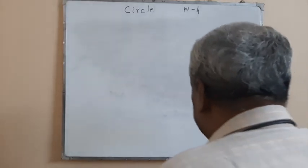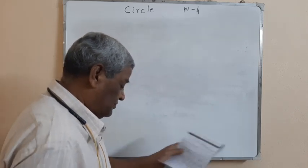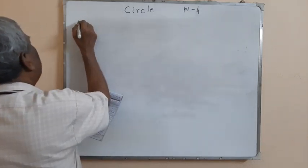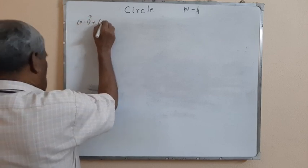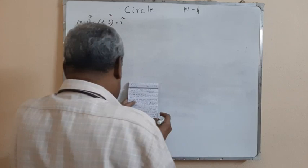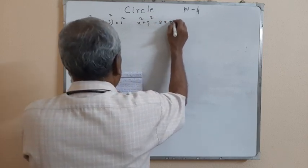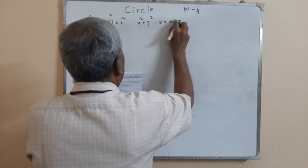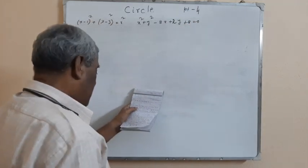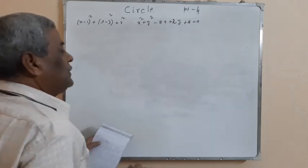Welcome. Today let us take a few more problems on circles. It is the fourth part of the video on circles. Our first problem is: if (x minus 1) squared plus (y minus 3) squared equals r squared, and x squared plus y squared minus 8x plus 2y plus 8 equals 0, meet at two distinct points, then find the range of r.